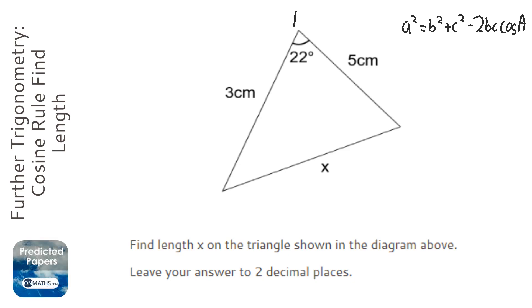Now the capital A is the angle, the lowercase a is the length opposite, and b and c—it doesn't matter which way around you put them.